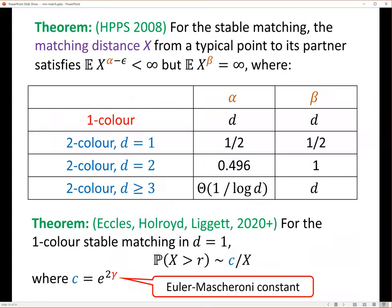A lot is known about this stable matching. In particular, you can look at the distance — the length of a typical edge. It has a power-law tail: some moments are finite and some are infinite. For one color in dimension d, and for two colors in dimension one, the exponent is one-half. For higher dimensions, the gap between the upper and lower bounds grows quite a lot.